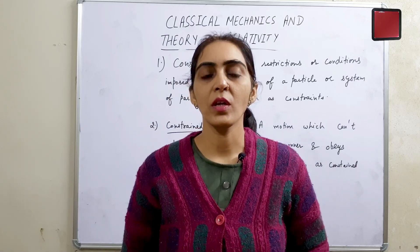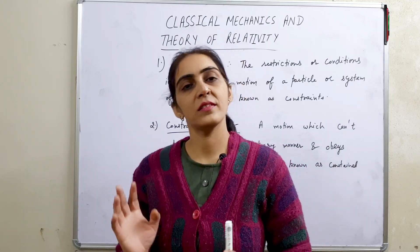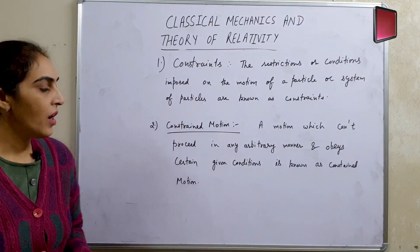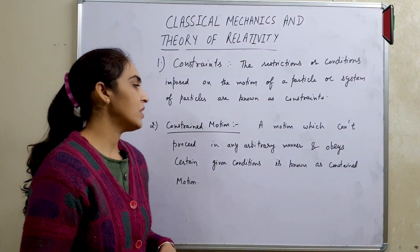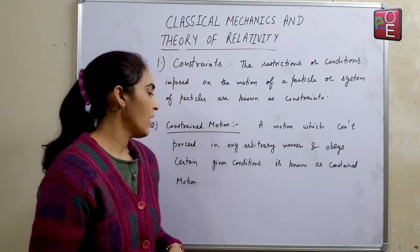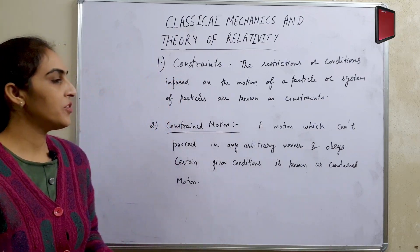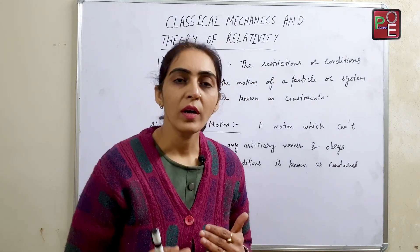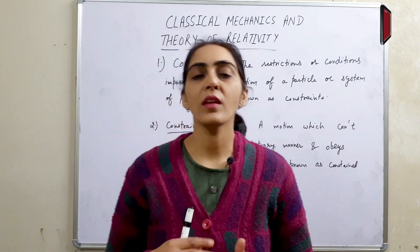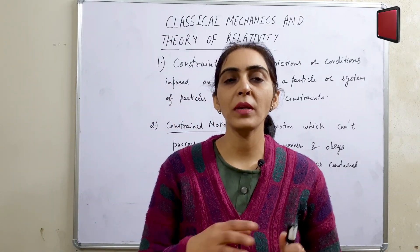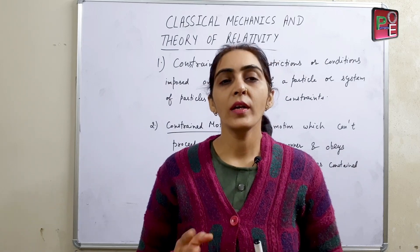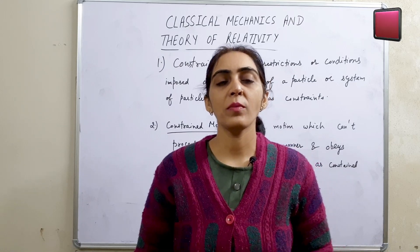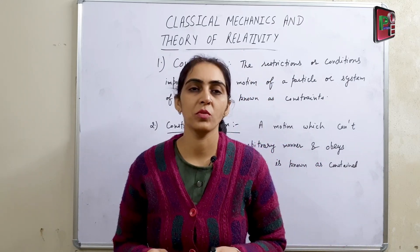Constrained motion: a motion which cannot proceed in any arbitrary manner and must satisfy certain given conditions is known as constrained motion. वो motion जो किसी भी arbitrary manner के अंदर नहीं हो सकता — arbitrary manner मतलब अपनी मर्जी से नहीं — और उस पर कुछ conditions लगाई जाएं, तो उस motion को हम constrained motion बोलते हैं।